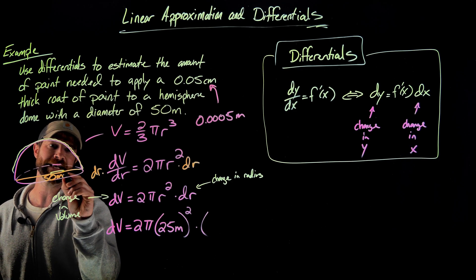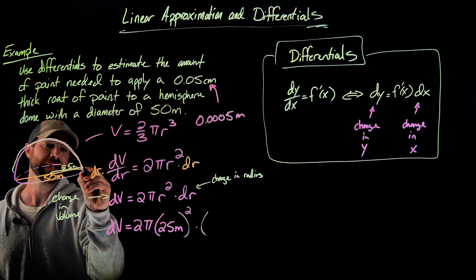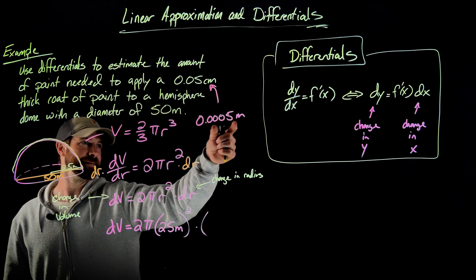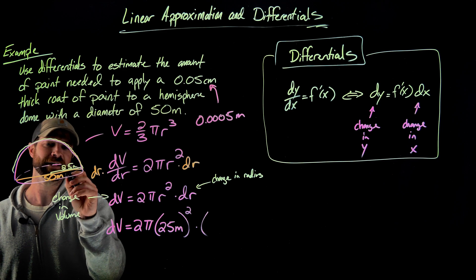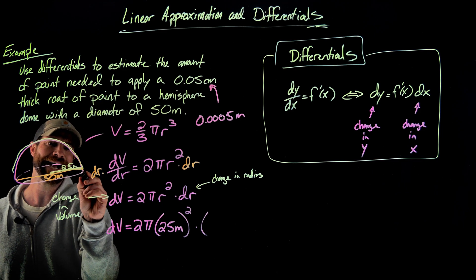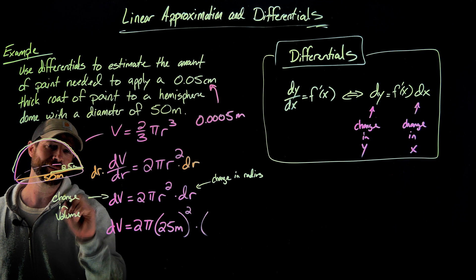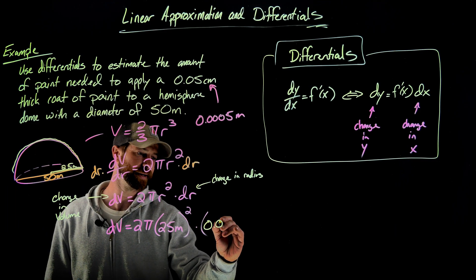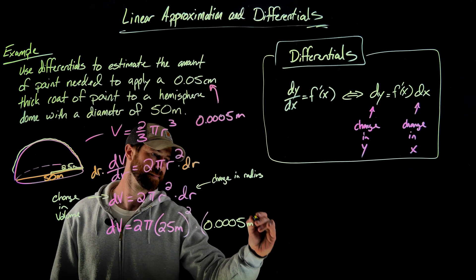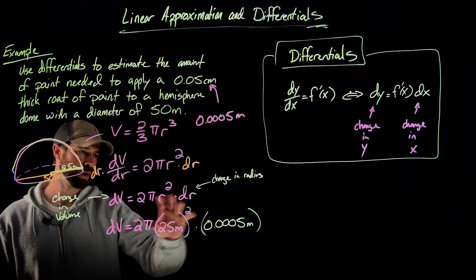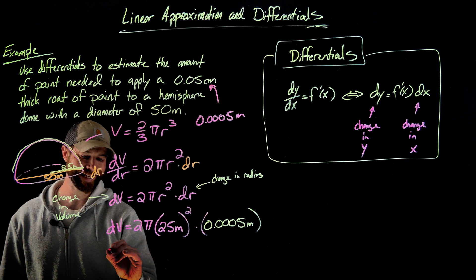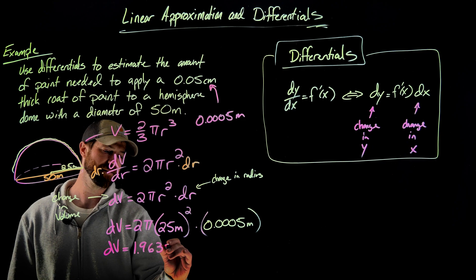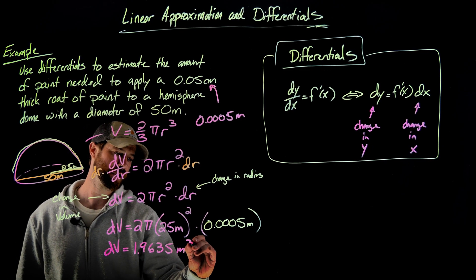And as I apply my paint here to the outside of this dome, that will represent, after I have 25 meters here, that little layer of five hundredth of a centimeter, however many meters that is. Once I add that on, that's going to increase the radius of this shape a little bit. That is my change in my radius. When I multiply this out, what I get is that dV equals 1.9635 meters cubed.